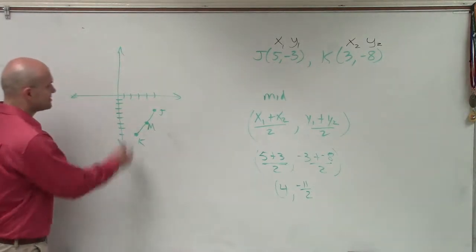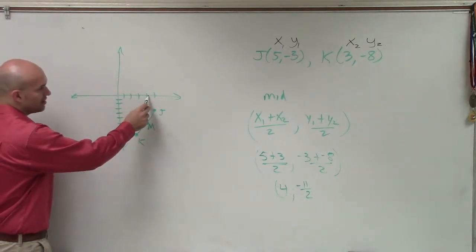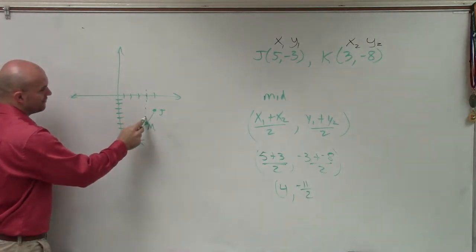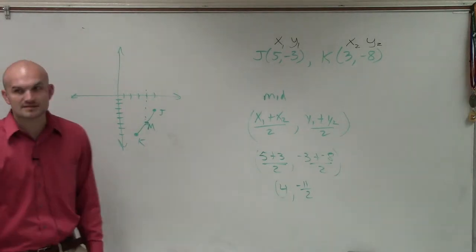And let's just go and double check. Let's see if that makes sense. 1, 2, 3, 4. OK? And then down 5 and 1 half. 1, 2, 3, 4, 5 and 1 half. So yeah, that works. It makes sense. Right?